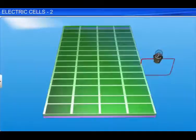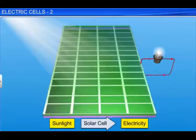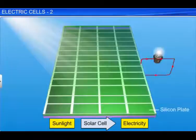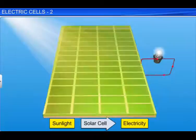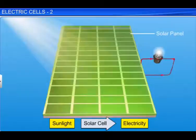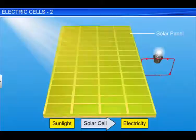Let us now study the solar cell. A solar cell converts sunlight into electricity. Silicon, a semiconductor material, is used in solar cells. When sunlight is incident on the silicon plate of the solar cell, it absorbs light and converts it into electrical energy. Several solar cells are connected together to form a solar panel. The energy obtained from a solar panel is much higher than the energy obtained from a single solar cell.